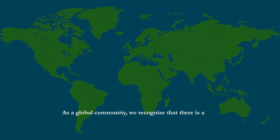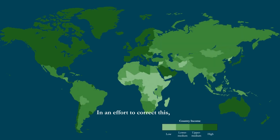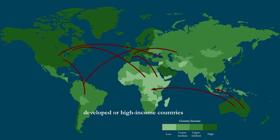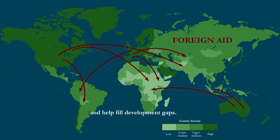As a global community, we recognize that there is a tremendous amount of inequality in our world. In an effort to correct this, developed or high-income countries spend billions of dollars each year in the form of foreign aid, which is meant to go to those countries most in need and help fill development gaps.